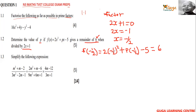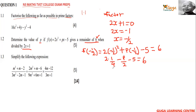We simplify: (negative ½)² gives positive ¼, and p times negative ½ gives negative p over 2. So we have ¼ minus p/2 minus 5 equals 6.